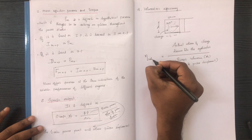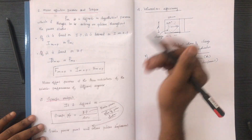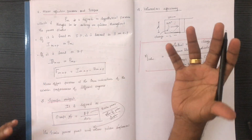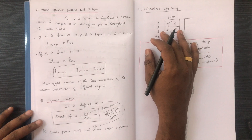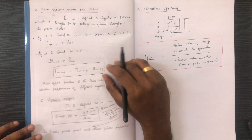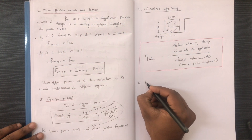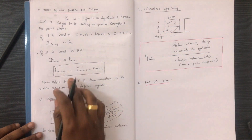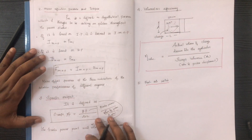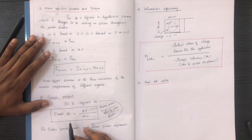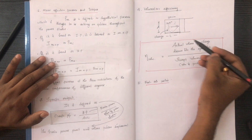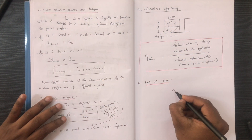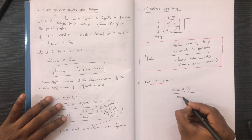Volumetric efficiency equals the actual volume of charge drawn in divided by the maximum swept volume. The fuel-air ratio is defined as the mass of fuel divided by the mass of air — this gives the fuel-air ratio used in combustion analysis.